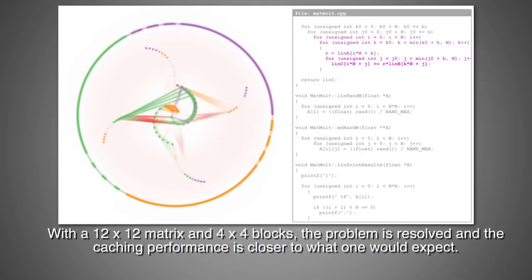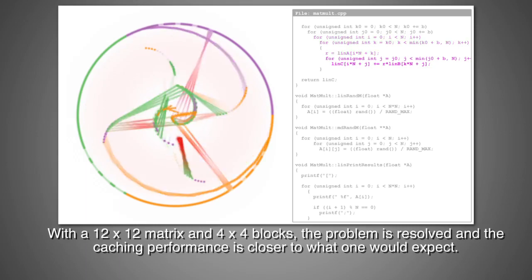With a 12x12 matrix and 4x4 blocks, the problem is resolved and the caching performance is closer to what one would expect.